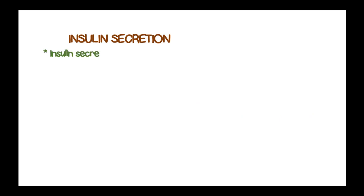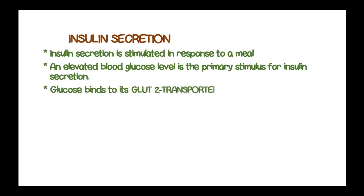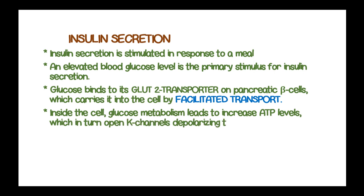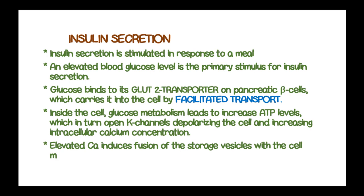Insulin secretion is stimulated in response to elevated blood glucose or hyperglycemia, which is the primary stimulus. Glucose binds to its GLUT2 transporter on the pancreatic beta cells, which carries it into the cell by facilitated transport. Inside the cells, glucose metabolism leads to increased ATP levels, which in turn close the potassium channels, depolarizing the cell and increasing the intracellular calcium concentration. Elevated calcium induces fusion of the storage vesicles with the cell membrane and stimulates insulin release.